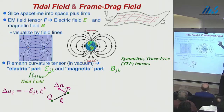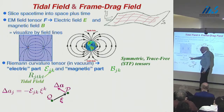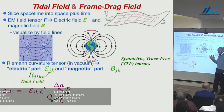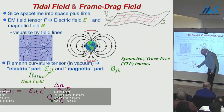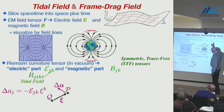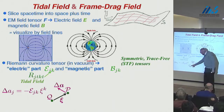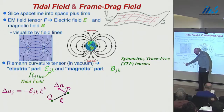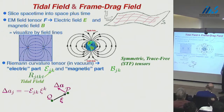More precisely, if you introduce an orthonormal basis with the time direction going orthogonal to this slice, the space-time, space-time part of the Riemann tensor is the tidal field. In the equation of geodesic deviation, that's the thing that pushes things together and apart. If I have two freely falling particles separated by a spatial separation vector ξ, then the acceleration of one particle relative to the other, δa, is just minus the contraction of the tidal field into the separation vector.